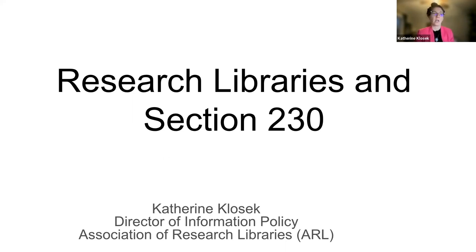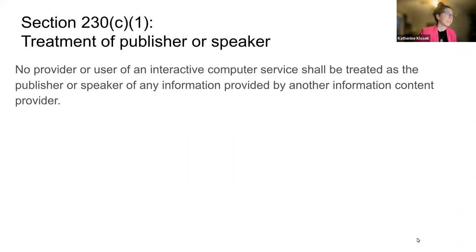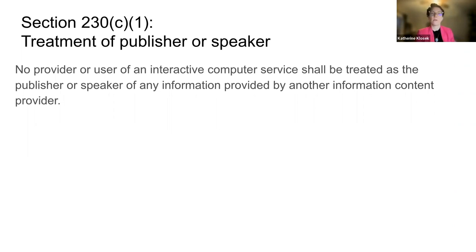Let's get started by talking about what the law actually says and how it functions. Section 230 is critical to an open internet, and this can't be overstated. Section 230 immunizes interactive computer services, including libraries, from liability for content that their users post, including illegal content, with some exceptions. And it does this primarily through two clauses.